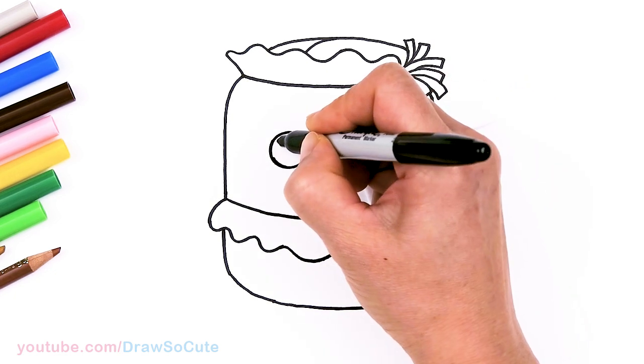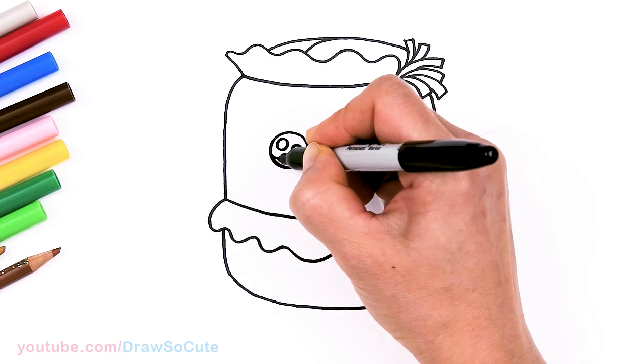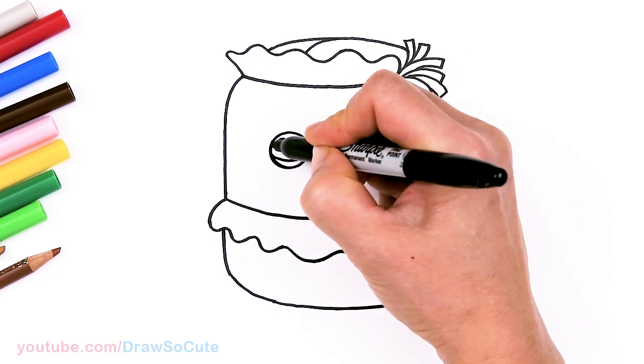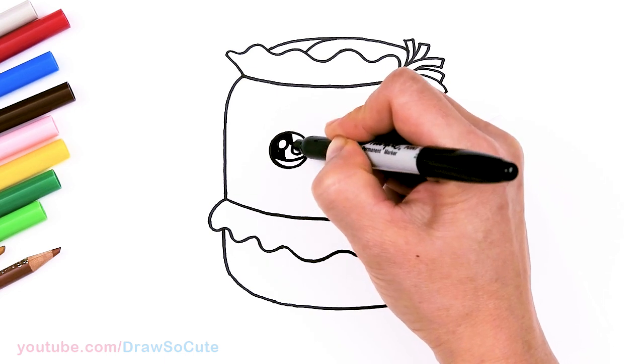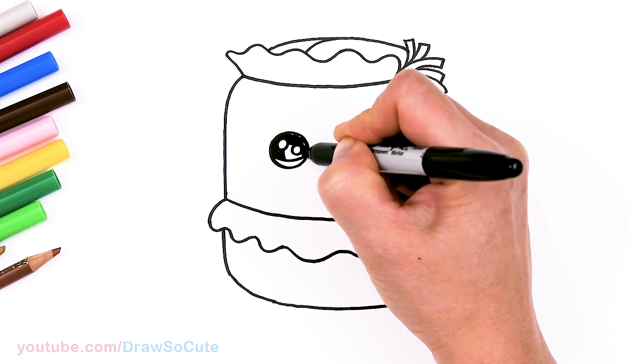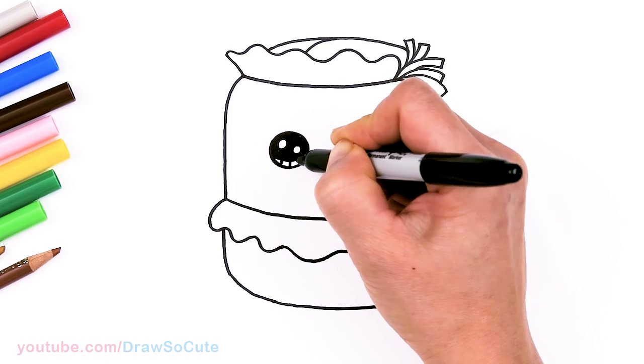And so let's come in here with two small circles for highlights. And a curved line at the bottom. And shade in the top. And lines at the bottom.